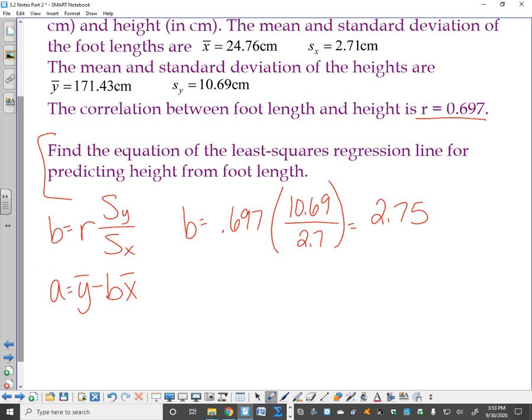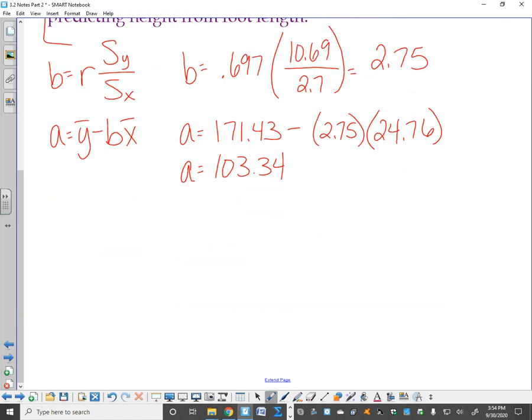Now that I have my slope, I'm going to go find my y-intercept. So my y-bar is 171.43 minus my b, which is 2.75. Always, always, always go 3 decimal places, times my x-bar, which is 24.76. I want you to pause it, type that in. I got 103.34. So now I have my slope and my y-intercept. So my y-hat equals 103.34, that's my y-intercept, plus 2.75x.